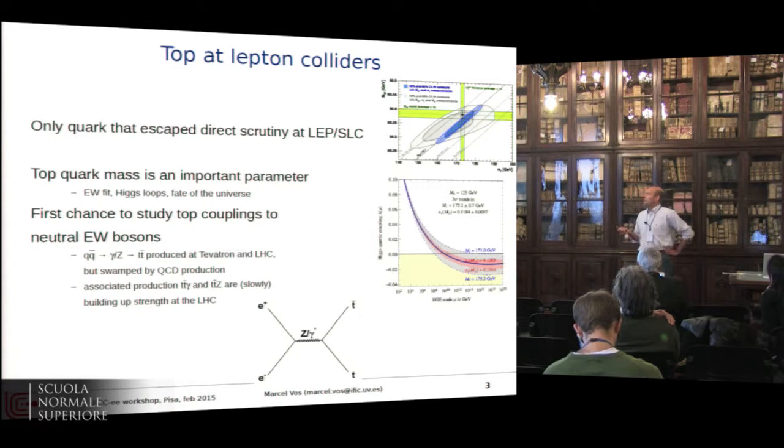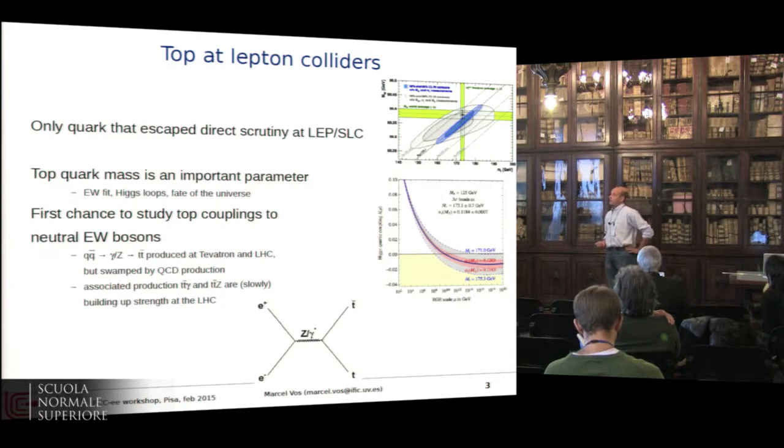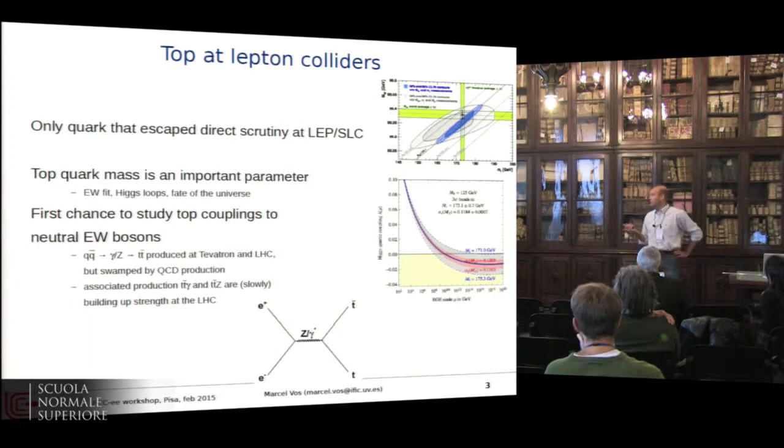So in a few lines, top is the only quark that we didn't have a chance to study in a previous lepton collider directly. The top quark mass has come up several times in this workshop as an important parameter for the fate of the universe, for the electroweak fit. It comes in a lot of loops in Higgs coupling, so it's a parametric uncertainty on many calculations. So we need to measure that as precisely as we can. And as I said, we can measure couplings to neutral electroweak bosons for the first time.